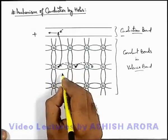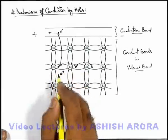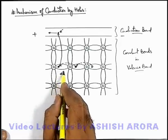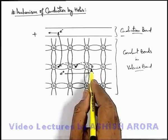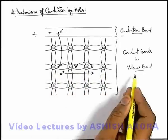From right to left, but correspondingly we can say that a charge which is equivalent to positive electronic charge is moving from left to right. So here we can say that hole is being transported in valence band.